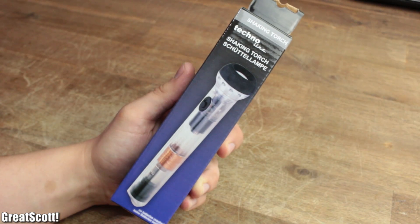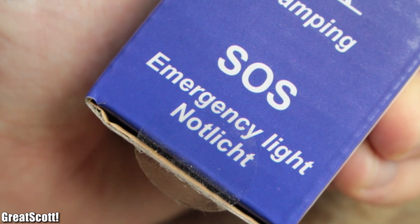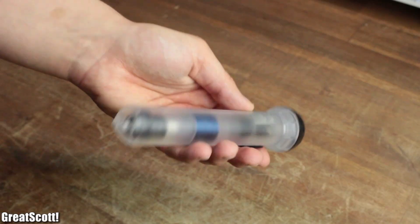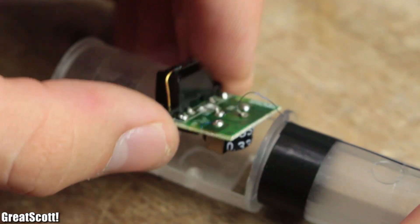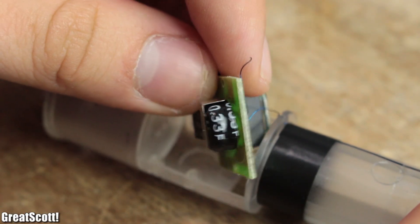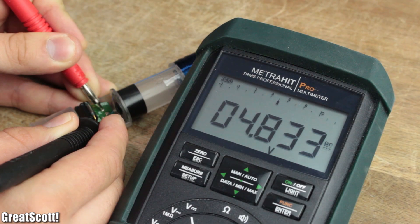A common field of application for those are emergency flashlights like the so-called shaking torch. After a couple of shakes, the 0.33 Farad supercap is charged up to 4.8 volts, which is around 3.8 joules of stored energy that can be used to illuminate a white LED for roughly 5 minutes.